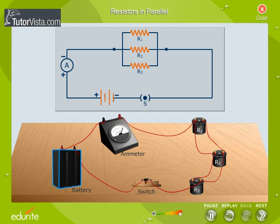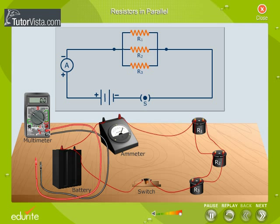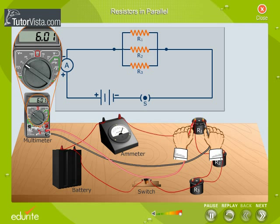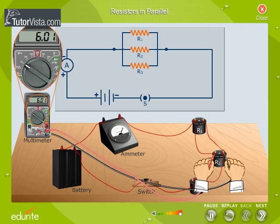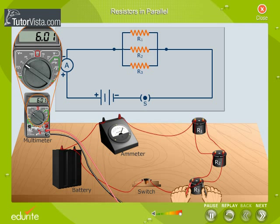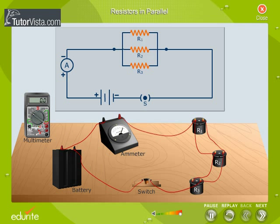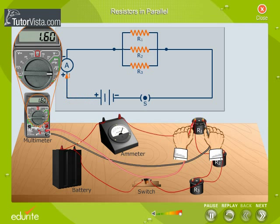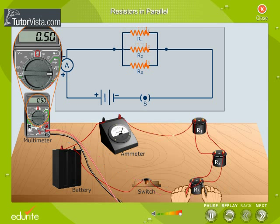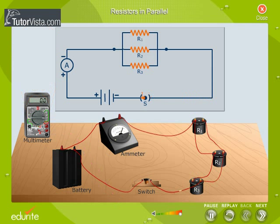The resistors are connected to a cell through an ammeter. Observe the multimeter reading when it is used to measure potential difference across R1 and R2, R2 and R3. Now observe the multimeter reading when it is used as an ammeter. The current flowing through R1, R2 and R3 is different, and the potential drop V1, V2 and V3 across R1, R2 and R3 is the same.